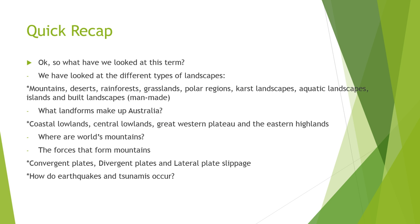So a quick recap of what we've looked at so far this term in humanities and how this is related to what we're looking at today. We started off looking at the different types of landscapes, which included mountains, deserts, rainforests, grasslands, polar regions, karst landscapes, aquatic landscapes, islands, and built landscapes, which were man-made.